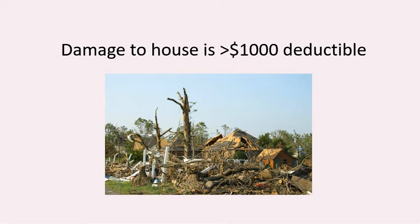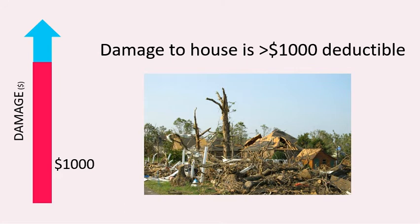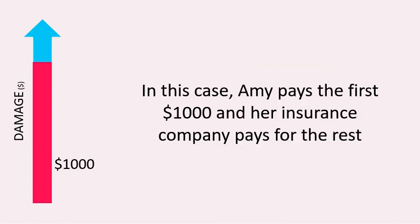The other situation is that damage was more than $1,000. Maybe the tornado went right past the house, ruined it, knocked down tons of trees, and now there's been a huge loss to Amy. In this situation, the damage is much more than $1,000 — as you can see in the graph, the damage is way higher than the deductible. So Amy is going to pay the first $1,000, and then the insurance company is going to pay the rest.